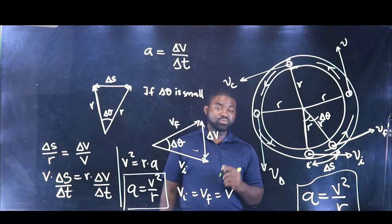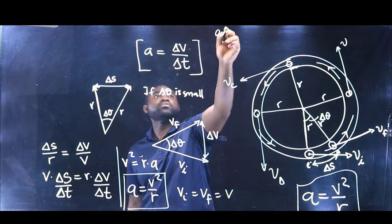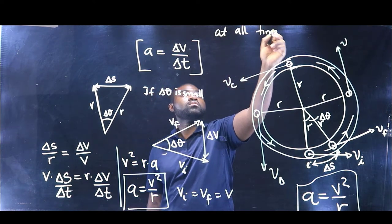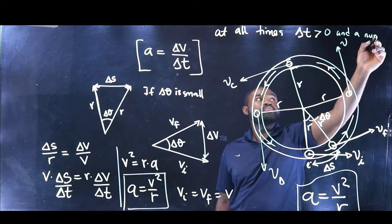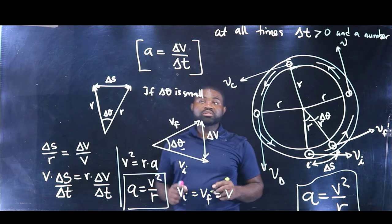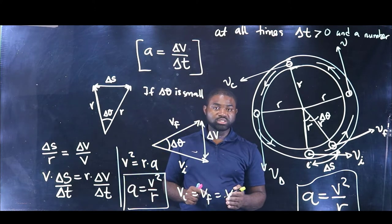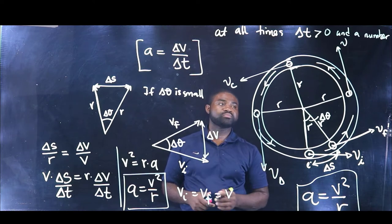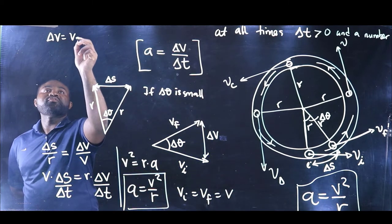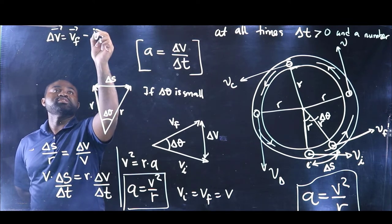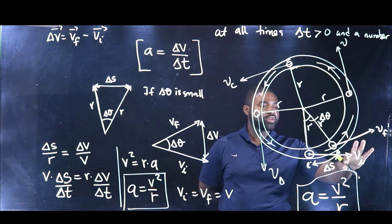To determine the direction of that acceleration, observe this: A is defined as delta V over delta T at all times. Delta T is greater than zero and is a scalar number, which means that the direction of A is the direction of delta V. The direction of acceleration is the direction in which the velocity changes. Keep in mind that delta V is V final minus V initial. So let's use a little bit of vectors and choose two points.